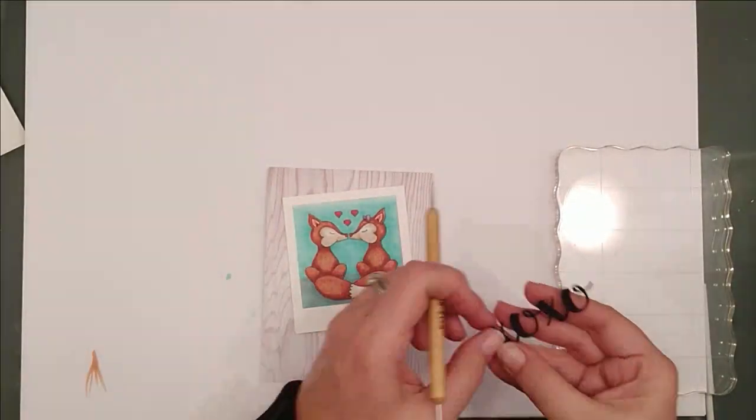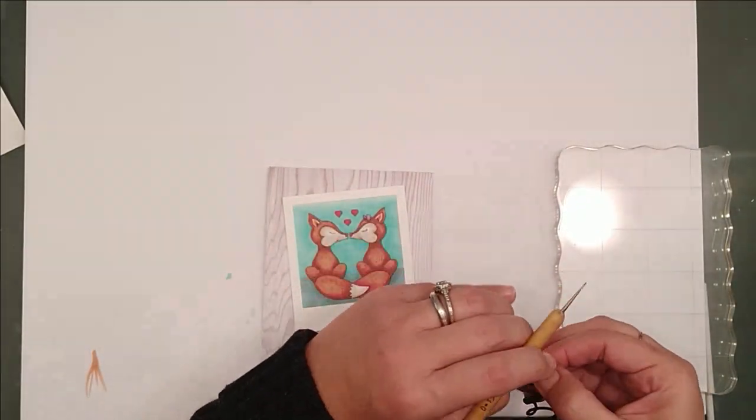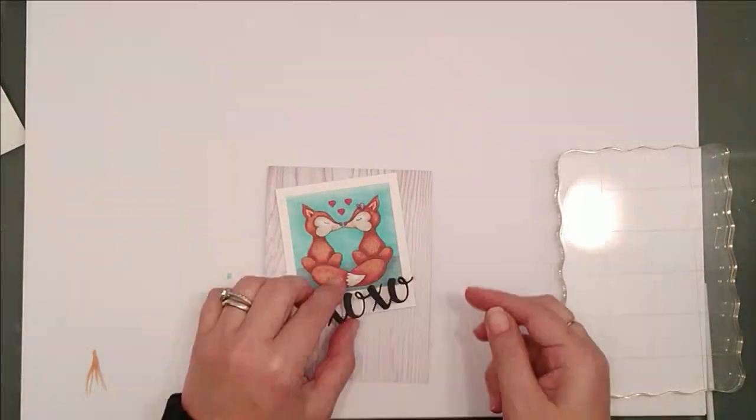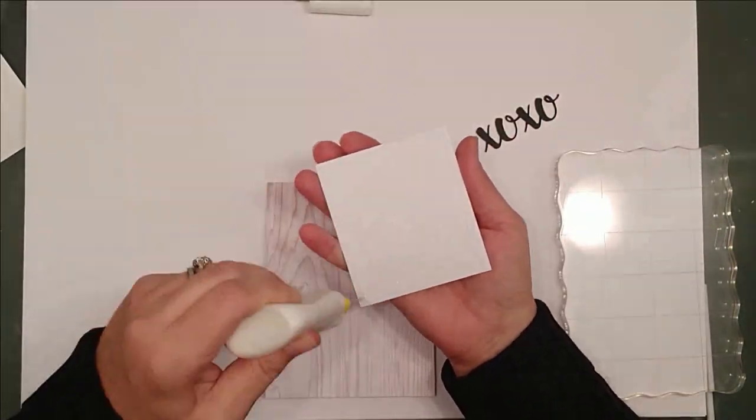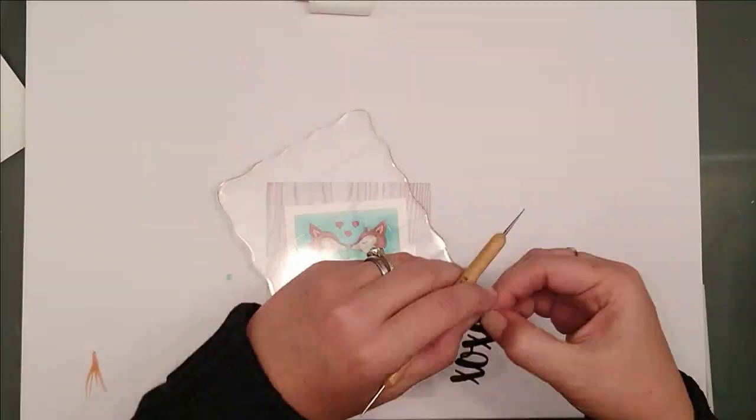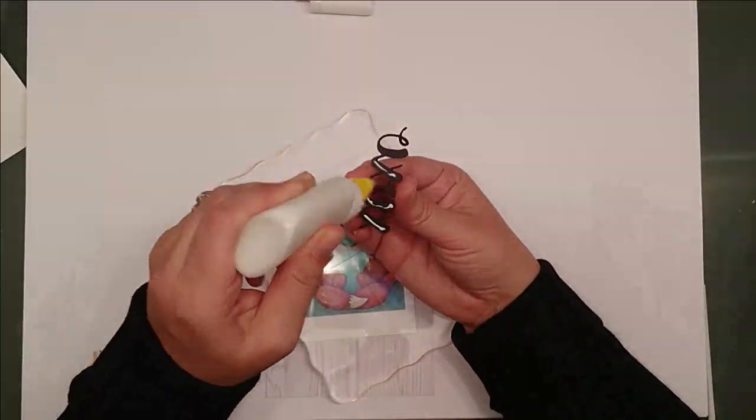Then I just start gluing my Polaroid and my sentiment to the card. And you'll notice I've got that big acrylic block to the side. I use that a lot. It helps hold things down while they're drying and keeps the edges from curling.